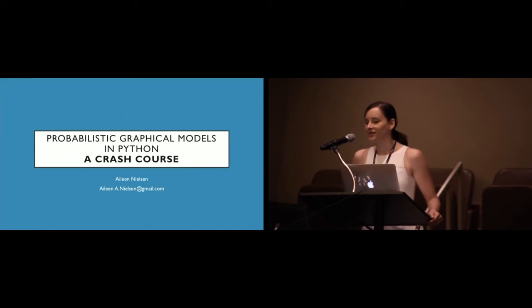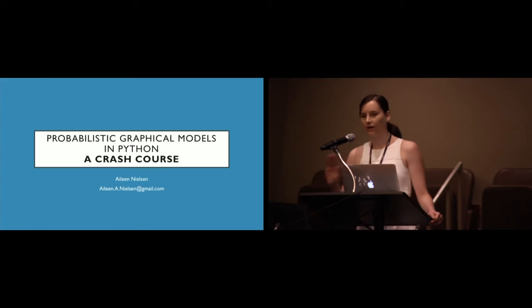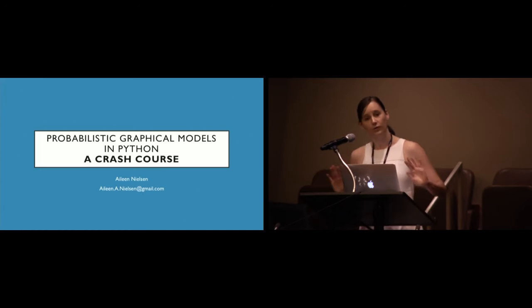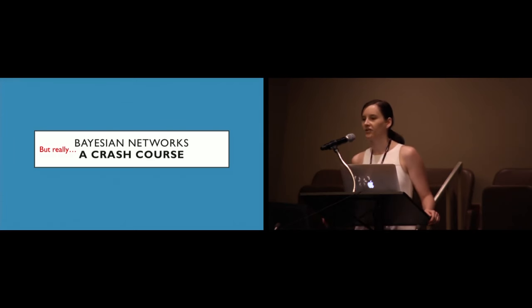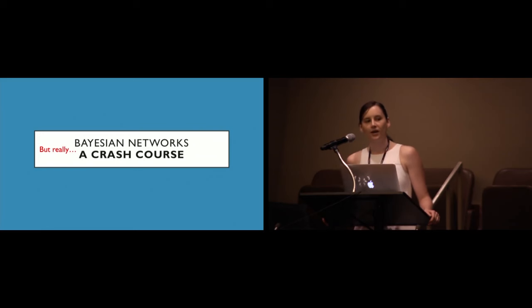Let's go ahead and get started on our topic. I'm going to be talking about probabilistic graphical models in Python, giving you a quick crash course with just very basic concepts and showing you the code for a simple model. But really, I should be calling this 'Bayesian networks: a crash course,' because I'm not really going to be talking about other kinds of probabilistic graphical models. I'm going to be focusing on directional, causal sorts of models.